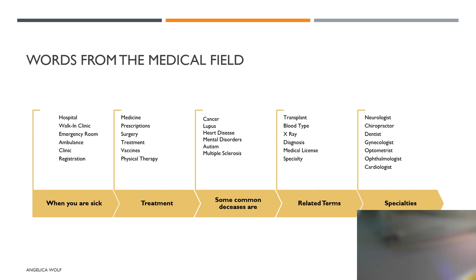Every doctor needs a medical license in order to practice medicine. Some doctors have a specialty. Some of those specialties include a neurologist, a chiropractor, a dentist, a gynecologist, an optometrist, an ophthalmologist, or a cardiologist.